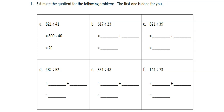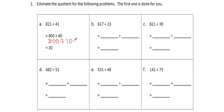Number one says estimate the quotient for the following problems. The first one is done for you. So for A, they had 821 divided by 41. That's around — remember, this is not an equal sign but our approximate symbol — 821 is around 800 and 41 is around 40. So we had 800 divided by 40 is 20. We did this extra step where we factored out 40: 40 is equal to 4 tens, or 10 divided by 4. 800 divided by 10 equals 80, and 80 divided by 4 — since 8 divided by 4 is 2, 8 tens divided by 4 is 2 tens — that's how we came up with 20.